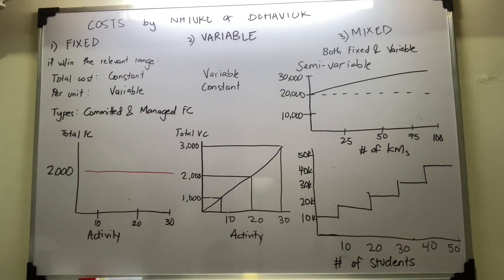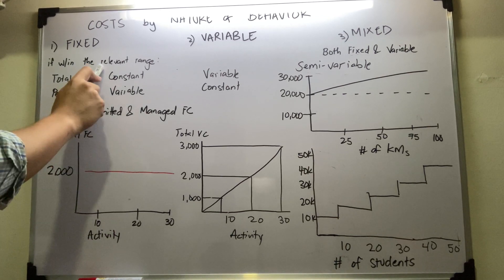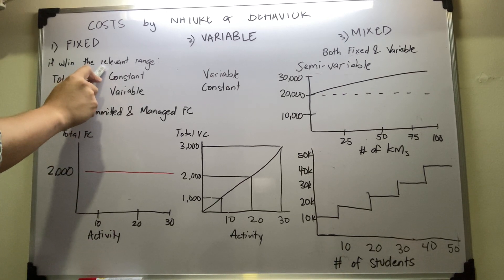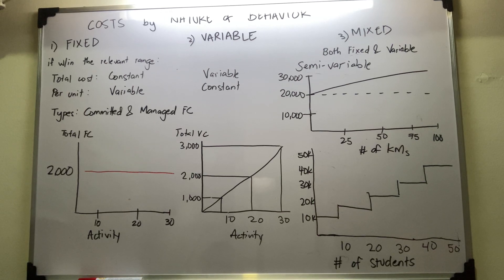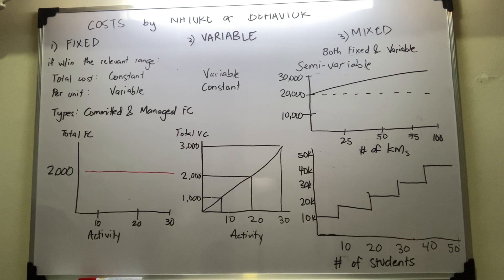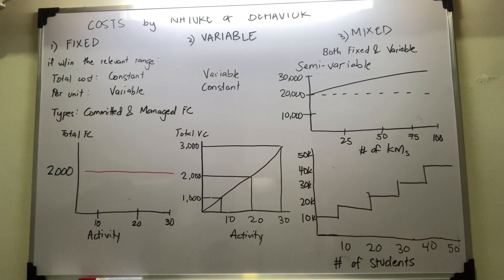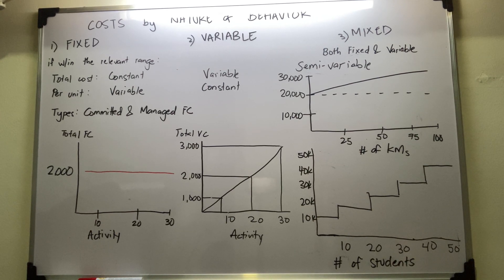What we have to establish first is the definition of relevant range. Relevant range is defined as a limited range of activity within which expenditures can be accurately classified as fixed costs or variable, or the range over which an assumed cost relationship is valid for the normal operations of a firm.